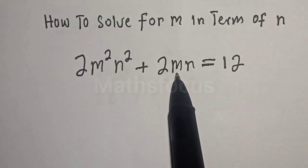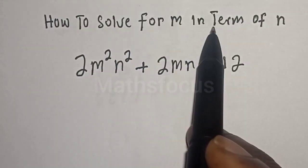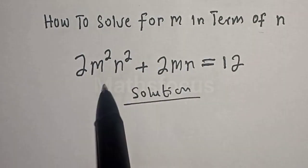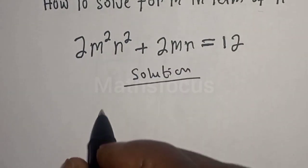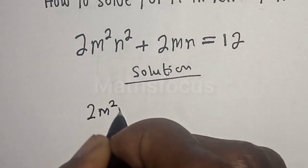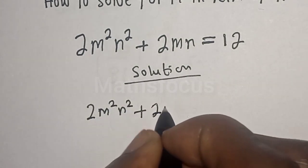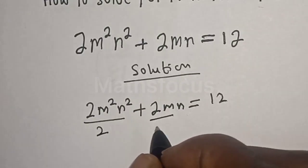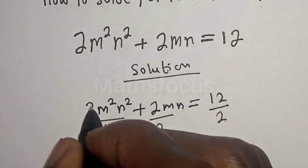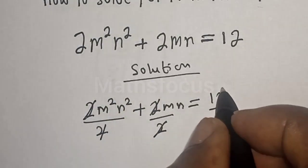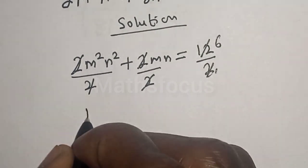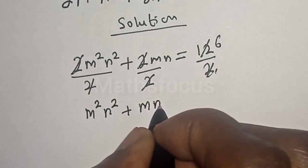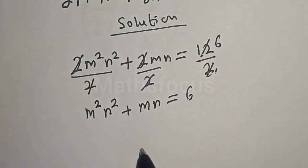Given 2m²n² + 2mn = 12, we want to solve for m in terms of n. We divide all terms by 2: 2m²n²/2 + 2mn/2 = 12/2, which gives us m²n² + mn = 6.